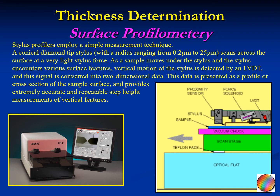The most important and direct technique to determine the thickness is called surface profilometry, in which a very fine stylus — usually with a tip radius ranging from 0.2 to 25 microns — scans across the surface at a very light force. As the sample moves under the stylus and the stylus encounters various surface features, a vertical motion of the stylus is detected, producing a vertical profile that shows the step height of the film, from which the thickness is determined.